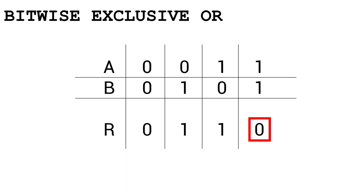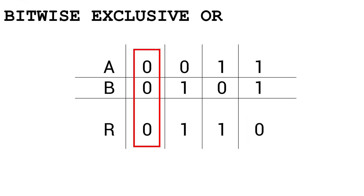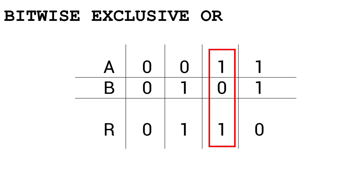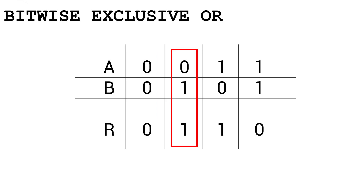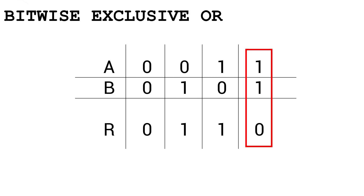Now the thing about exclusive OR is it changes just that last little bit — everything else remains the same. Zero and zero gives you zero. One and zero gives you one. Zero and one gives you one. But now one and one — because exclusive OR has to be definitely one of them and not both of them — then one and one gives you zero.